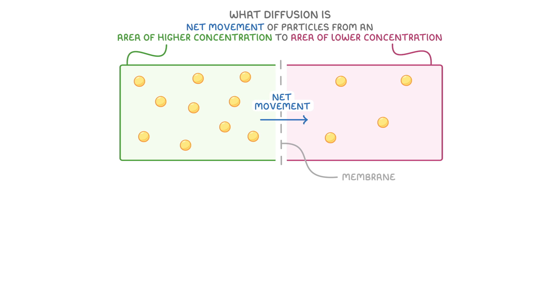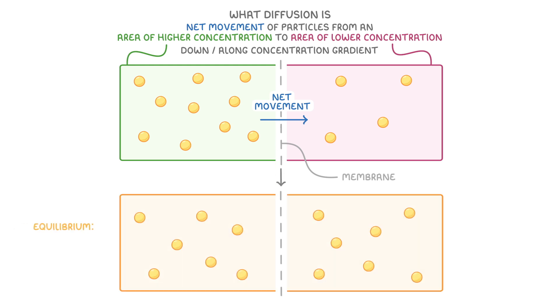When particles move from a high to low concentration, we describe this as happening down or along a concentration gradient. Eventually, they reach equilibrium, and at this point, particles are evenly distributed so that there are approximately the same number of particles on either side of the membrane, even though they are still individually moving around.